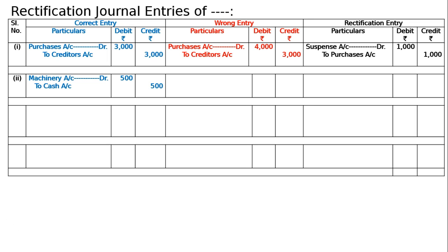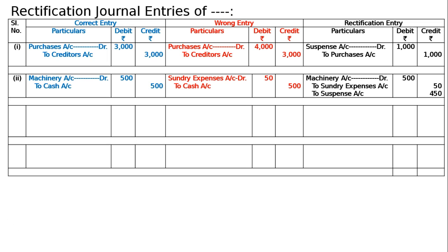The mistake was sundry expenses account debited five hundred rupees to cash account. In the rectifying entry, machinery account is debited five hundred. The sundry expenses debit from the wrong entry must be credited to nullify it — sundry expenses account credited fifty, and the balance of four hundred fifty goes to suspense account.